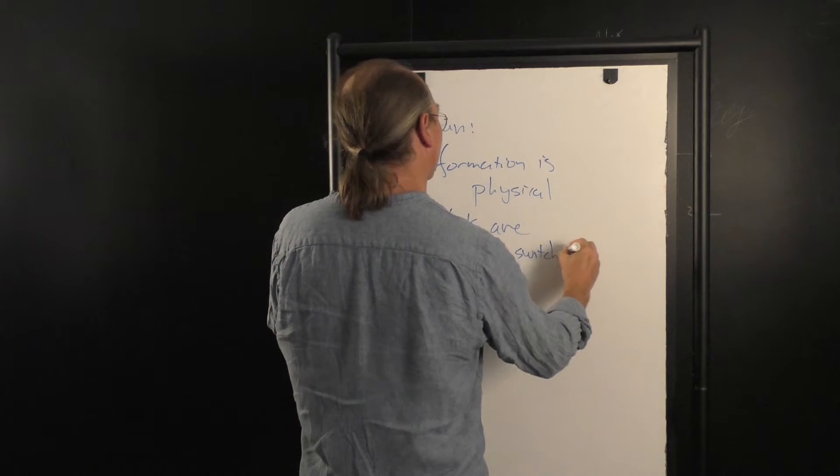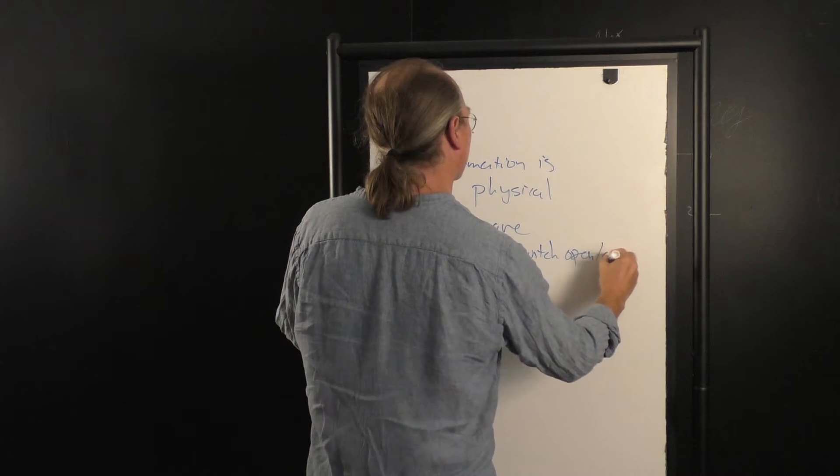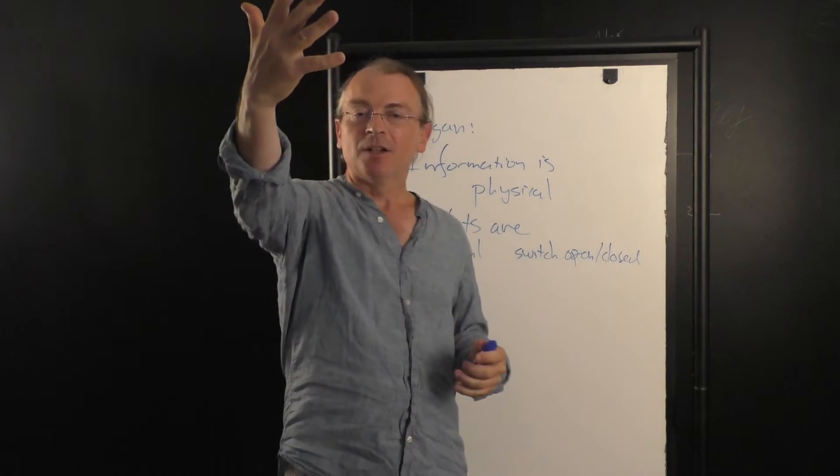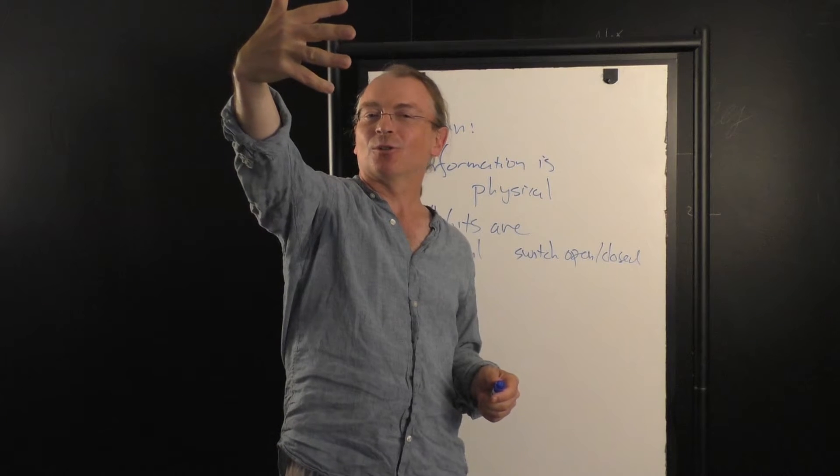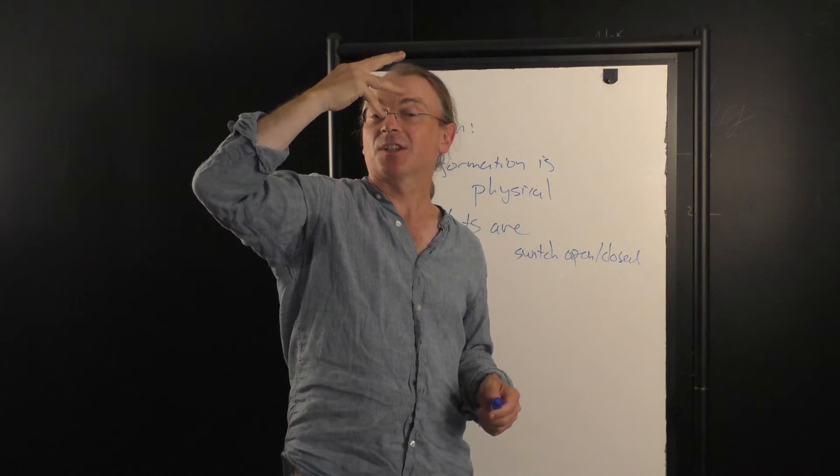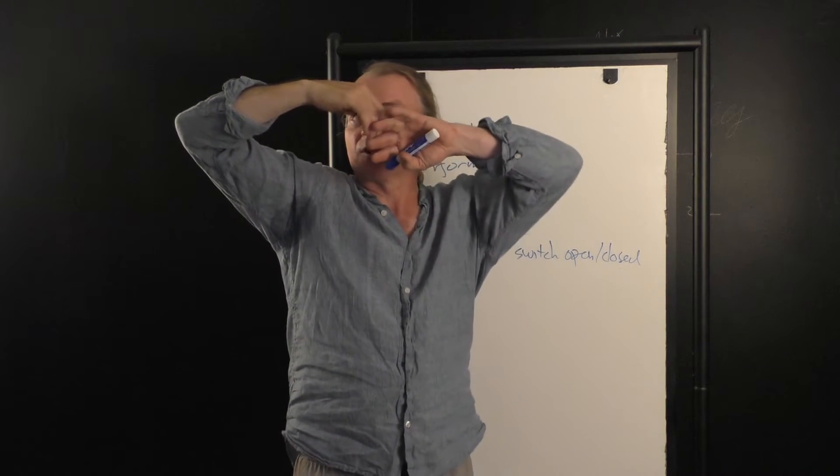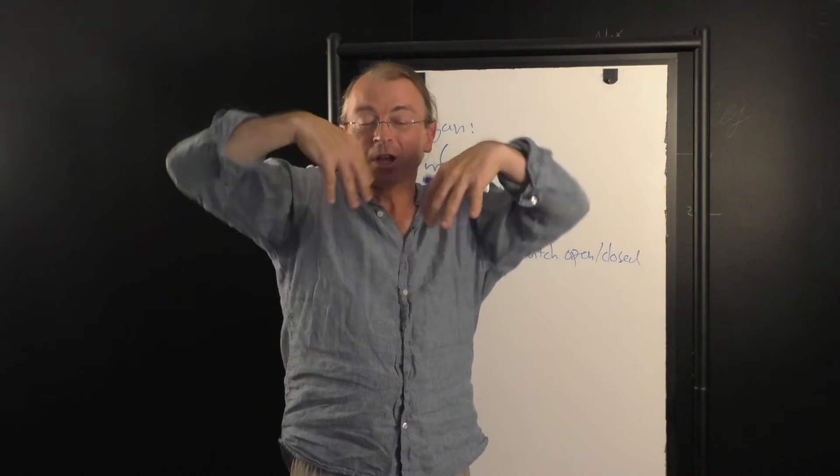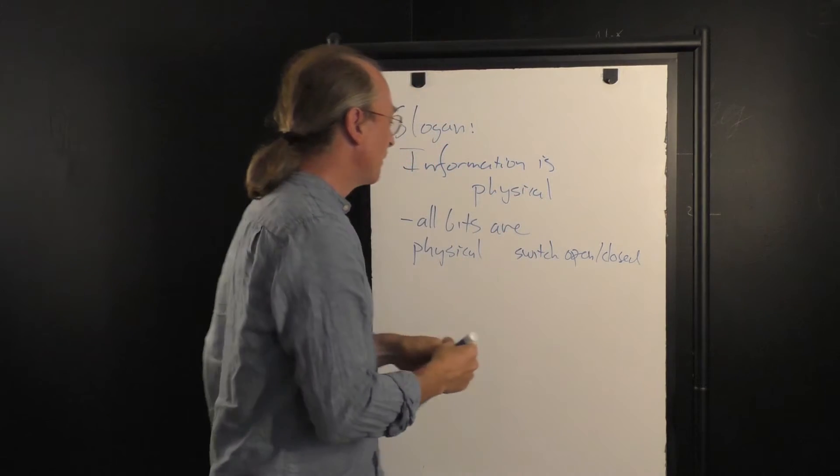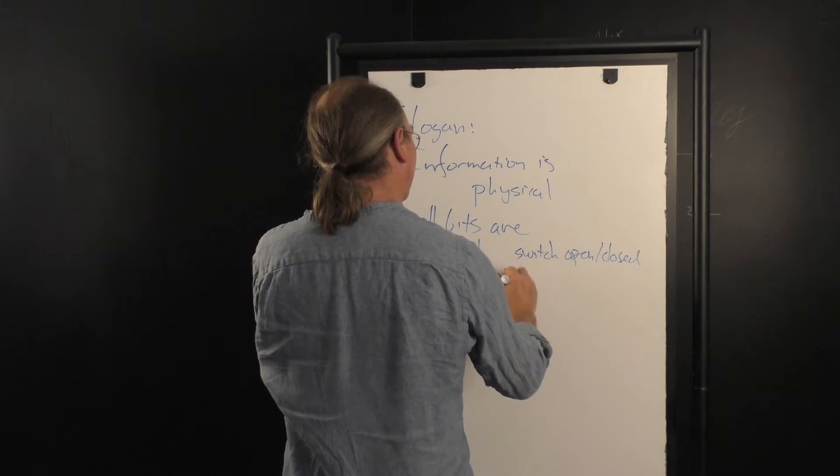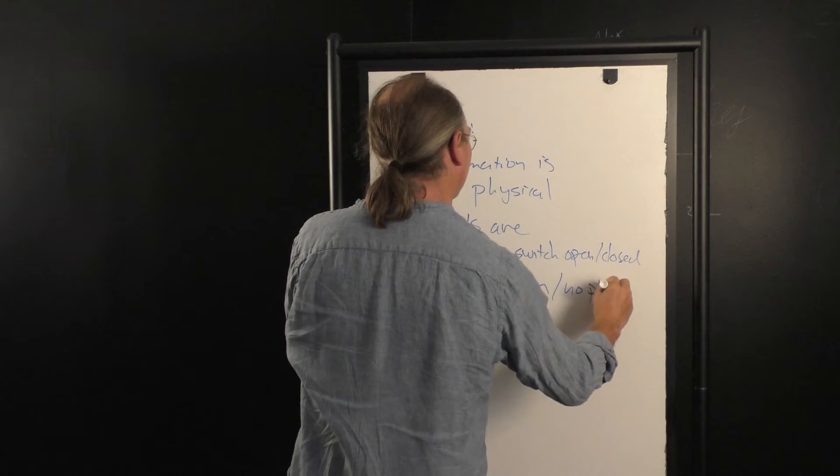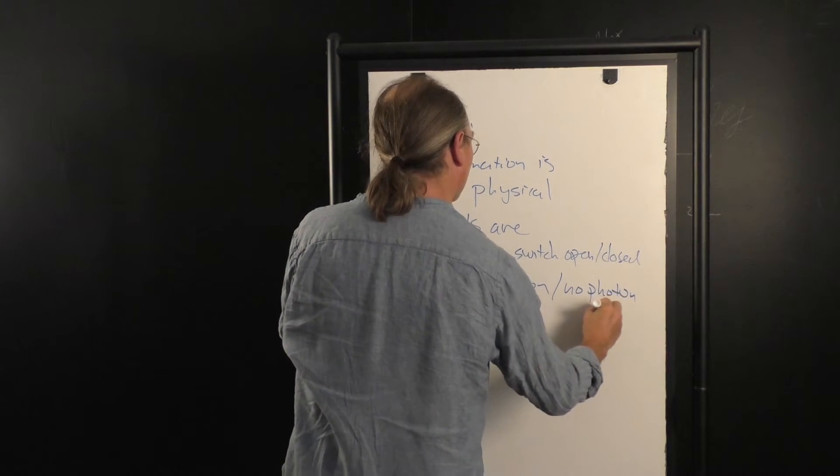When I get information in my eye, when I see light, it means a particle of light, a photon, comes into my eye, excites a retinol molecule which causes a cascade of neurotransmitters which then allows me to physically see what's going on. We could have a photon, which we'll call one, or no photon, which we'll call zero.